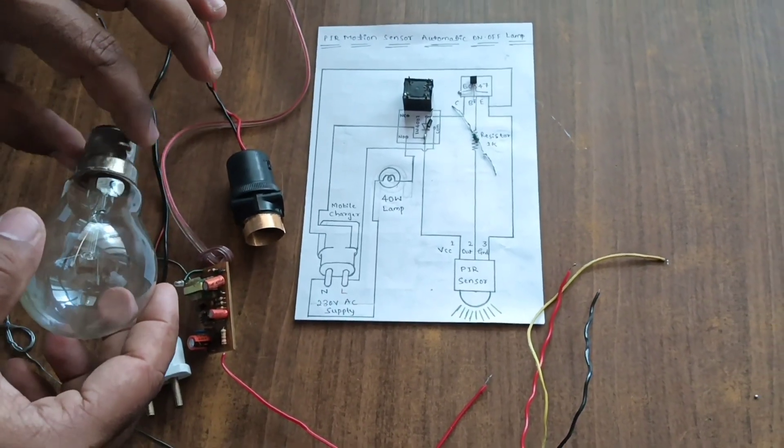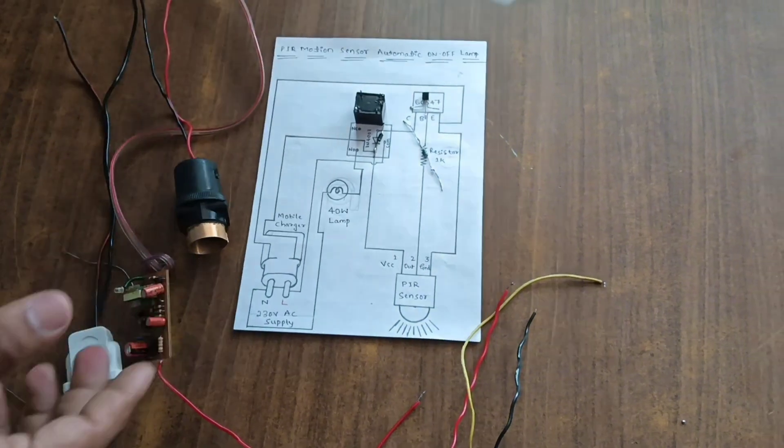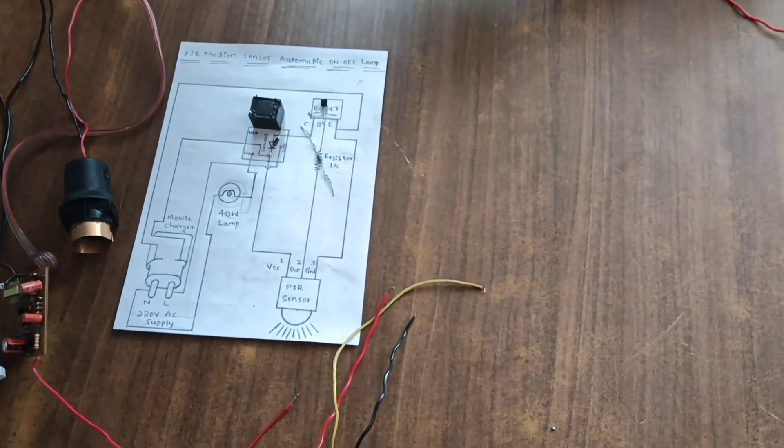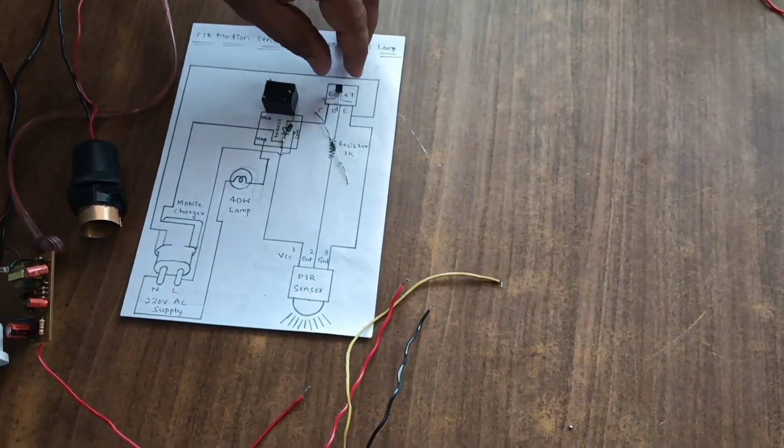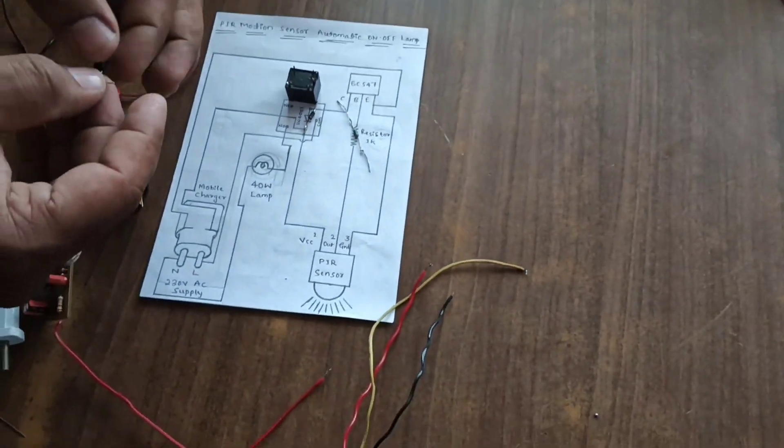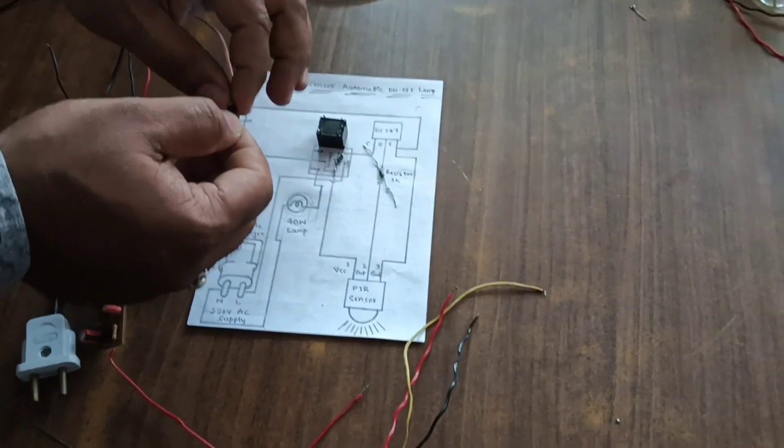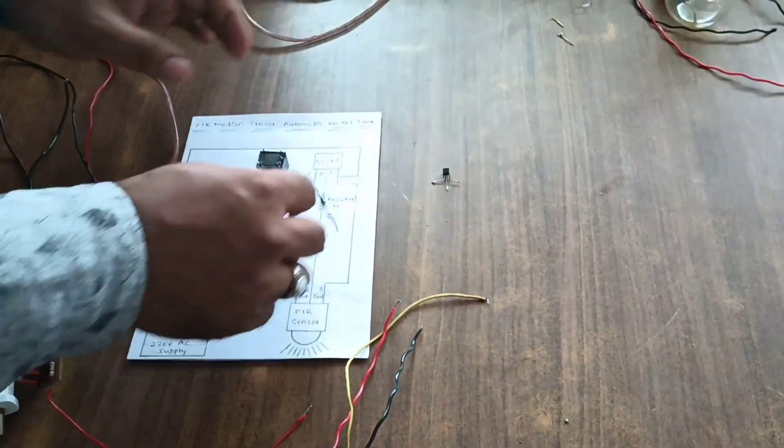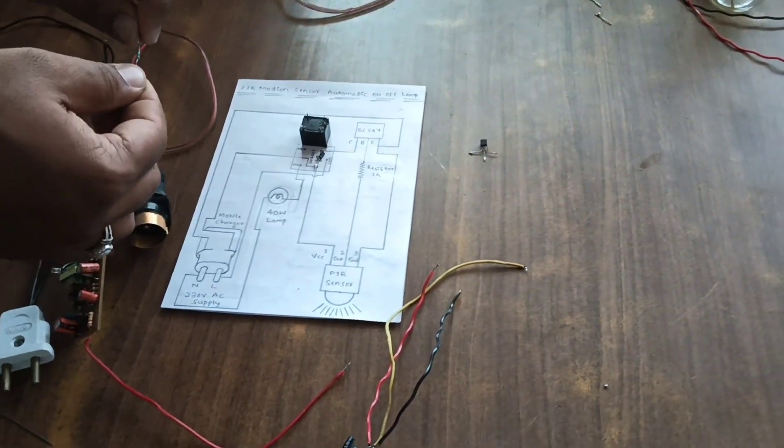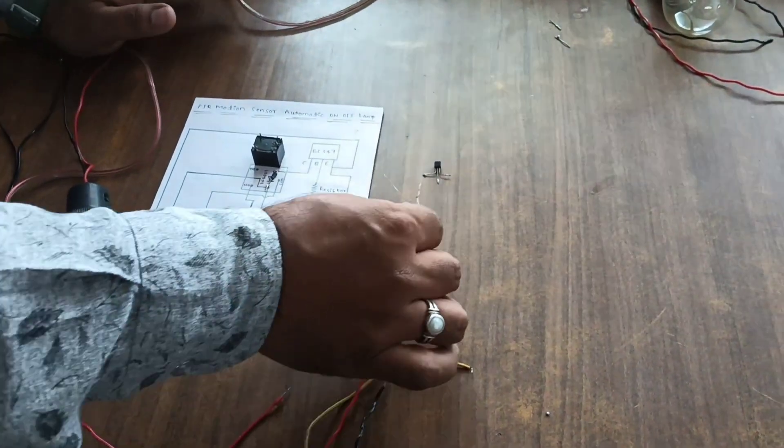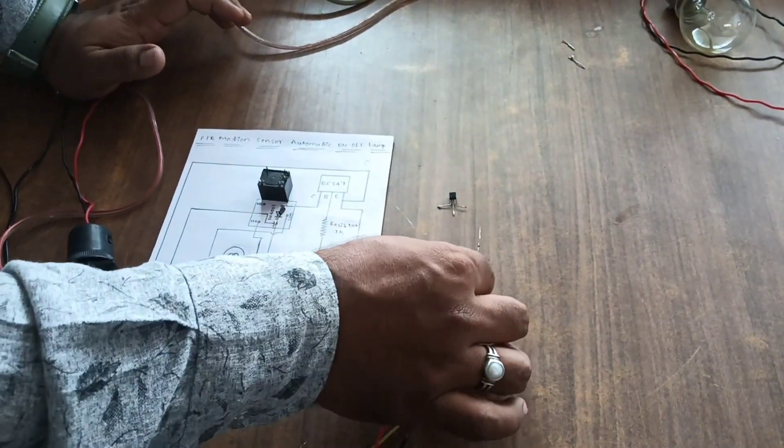Now let's see how the connections are. Firstly, BC547 transistor. The base of the BC547 transistor is connected to 1 kilohm resistor.